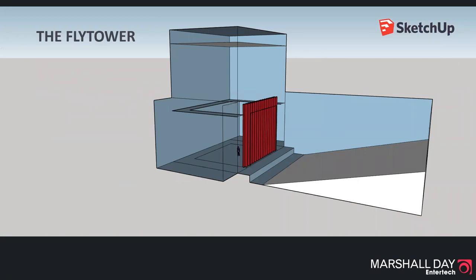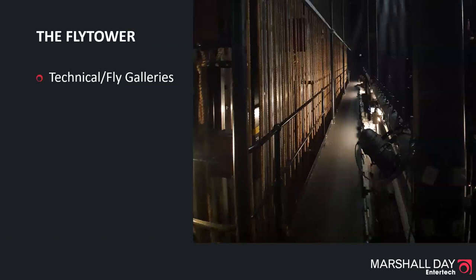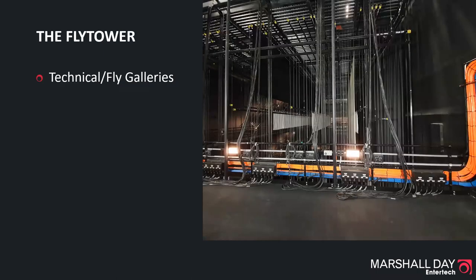If we have a quick look from another angle, we can see the main components inside the fly tower. We'll generally have at least one gallery just above the height of the proscenium opening. This gallery might be used for patching and hanging lighting fixtures, possibly for loading counterweights and manipulating hung scenery. Sometimes additional galleries are included above this one for loading counterweights. A loading gallery used only for loading and unloading counterweights can look a bit like this one — you can see the ropes from the counterweight system to the left and the stage below to the right.